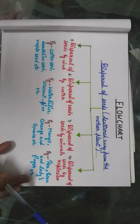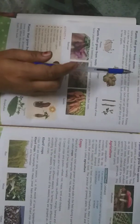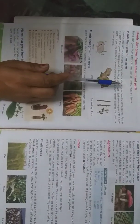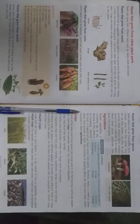Now let us start the new topic: plants that grow from other plant parts. In a previous class, you already learned that a plant has many parts like stem, roots, leaves, and flowers. Plants also grow from different parts such as stem, roots, and leaves.